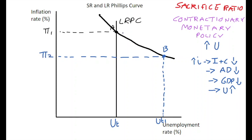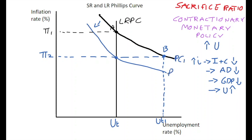When the economy reduces down to point B after contractionary monetary policy, over time, as people come to understand that prices are rising more slowly, the expected inflation level falls. This means that the short-run Phillips Curve tends to shift leftwards. When expectations drop, so too does the Phillips Curve in the short run, giving us a second short-run Phillips Curve.